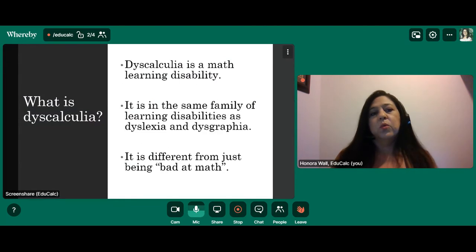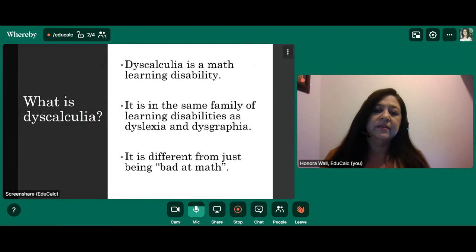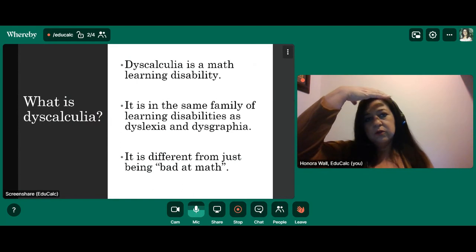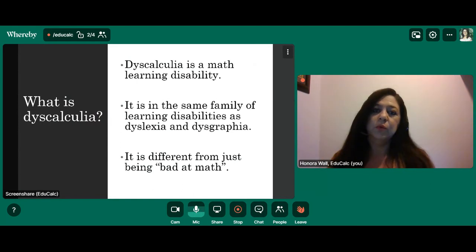First of all, let's discuss what is dyscalculia. This is a math learning disability. It's in the same family as dyslexia or dysgraphia. It's a lifelong condition that occurs in a weakened parietal lobe, right about here in the brain.